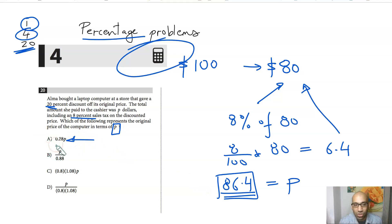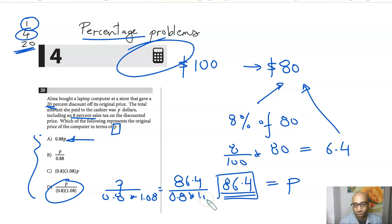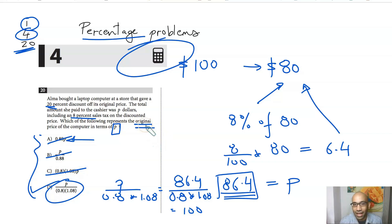Now substitute p equals 86.4 into each answer choice to see which gives 100 — because we set the original price to $100. You can verify that p divided by 0.8 multiplied by 1.08, in other words 86.4 divided by 0.8 times 1.08, equals 100. The other expressions give different values, so this is the correct answer, which represents the original price.